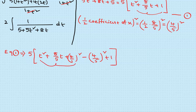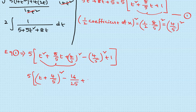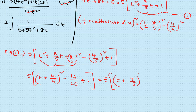Writing it in the (a+b)² form where a = t and b = 4/5: the 8/5 equals 2×(4/5), confirming the square. Simplifying, −16 + 25 = 9, so 9/25 = (3/5)². The denominator is now 5·[(t + 4/5)² + (3/5)²].